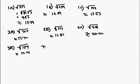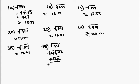3b: the square root of 184. I can break that down into the square root of 4 times the square root of 46, which is 2 square root of 46. That's the furthest it can be broken down into simplest form, and that is approximately 13.56. 3c: the square root of 219. That can't be simplified any further, and that's approximately 14.80.